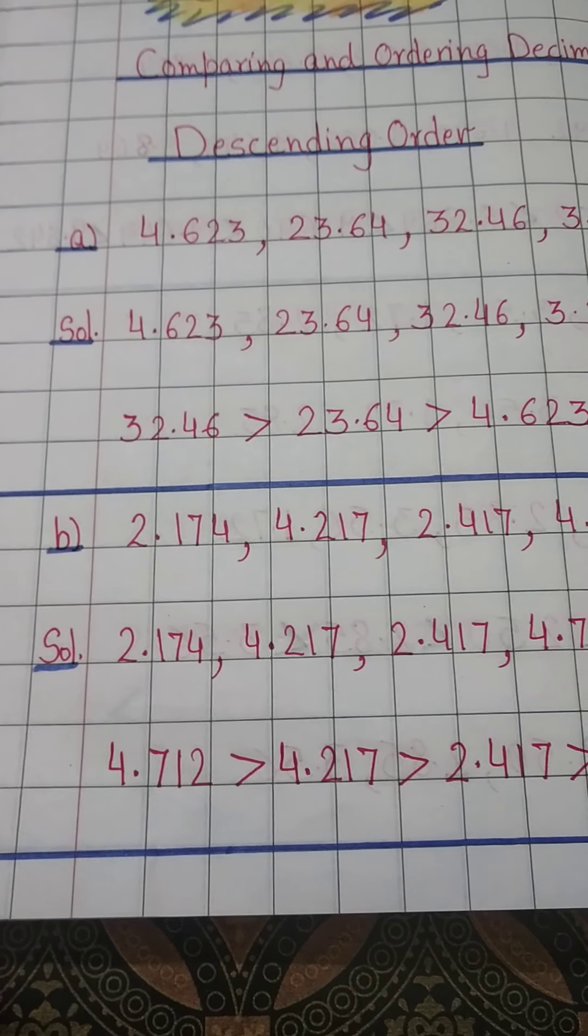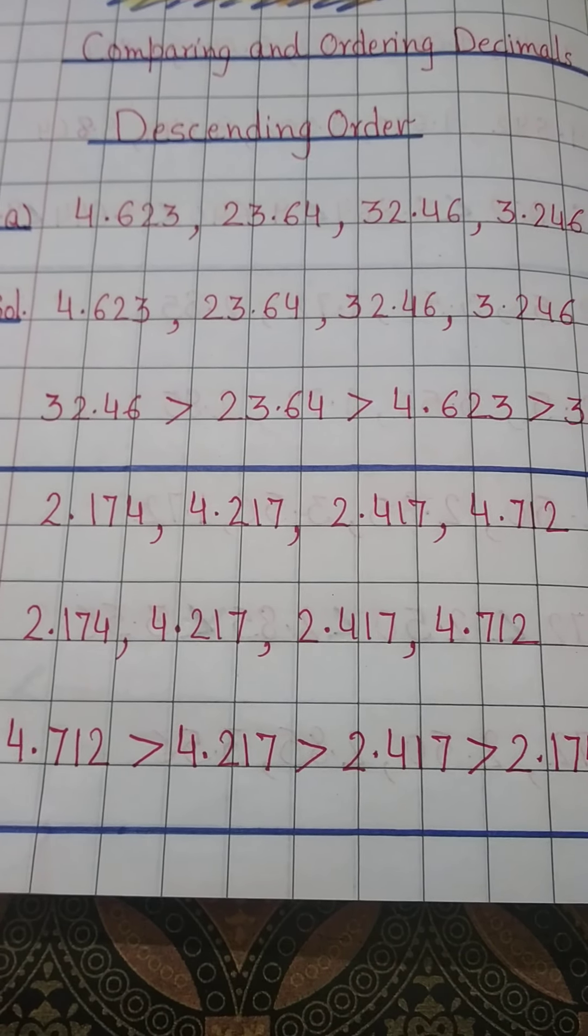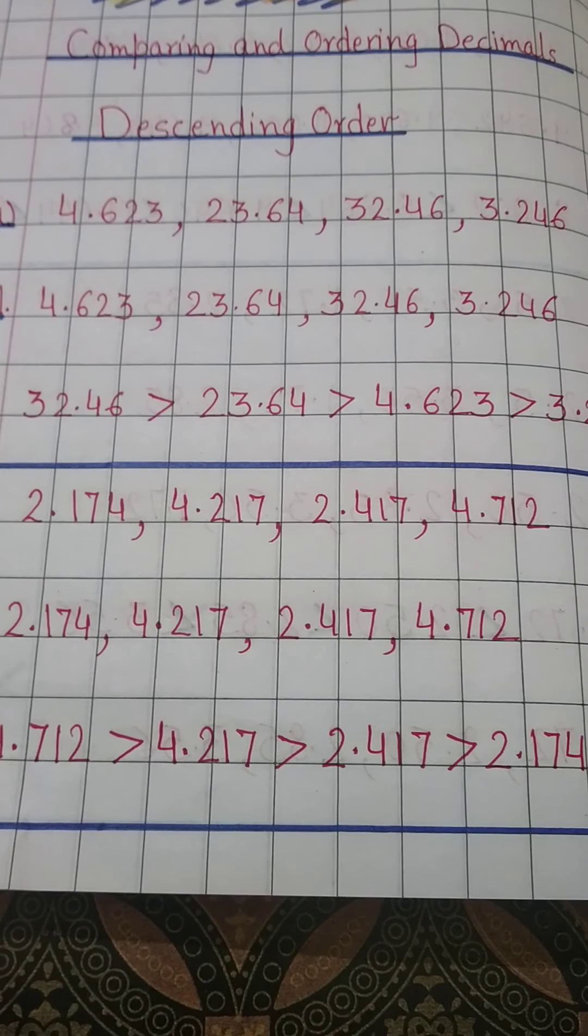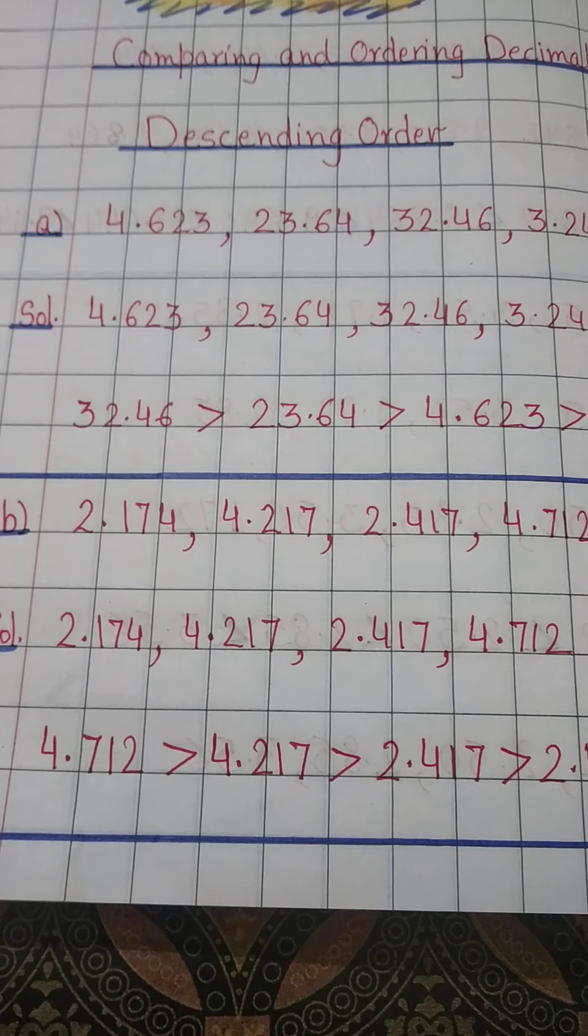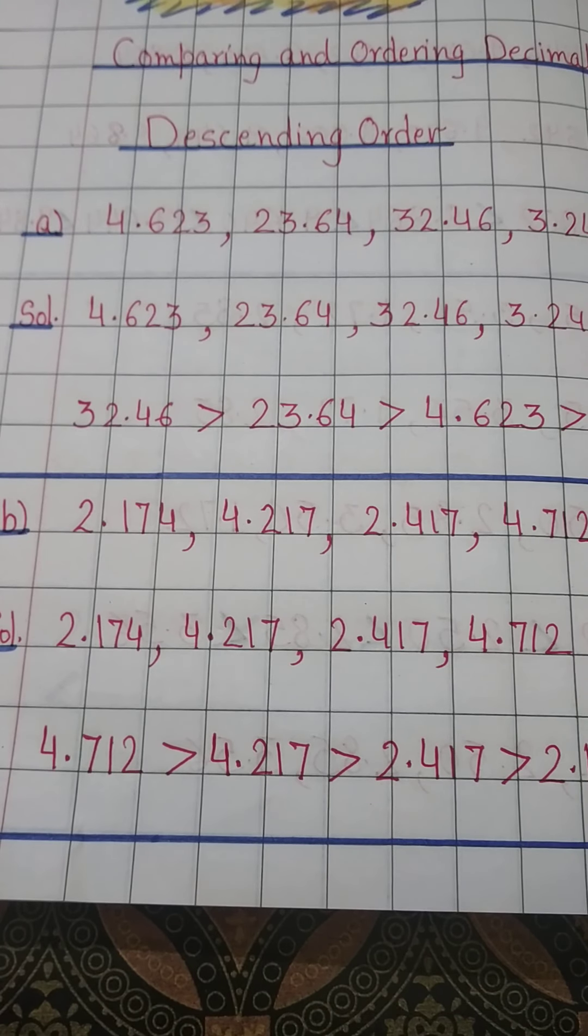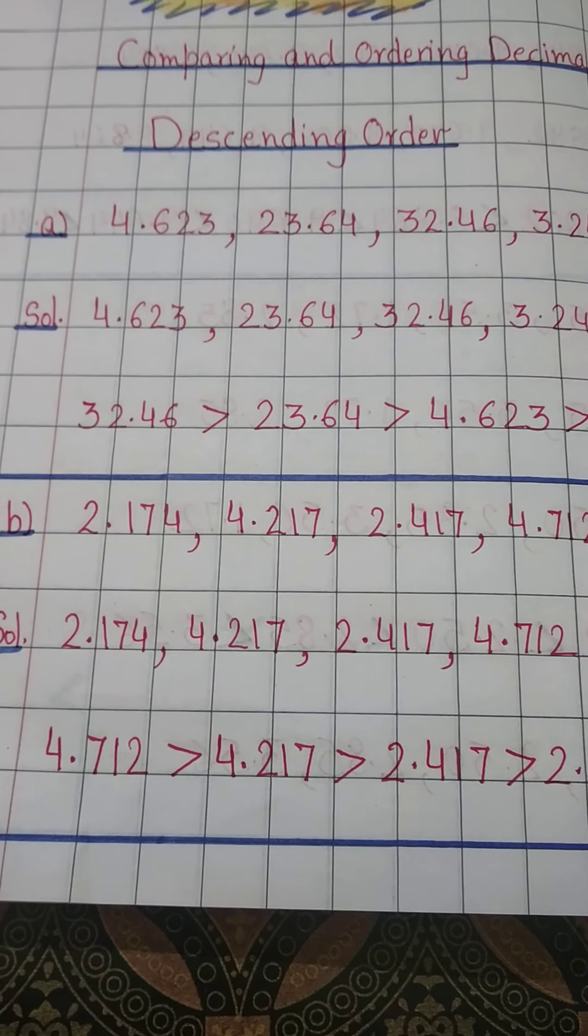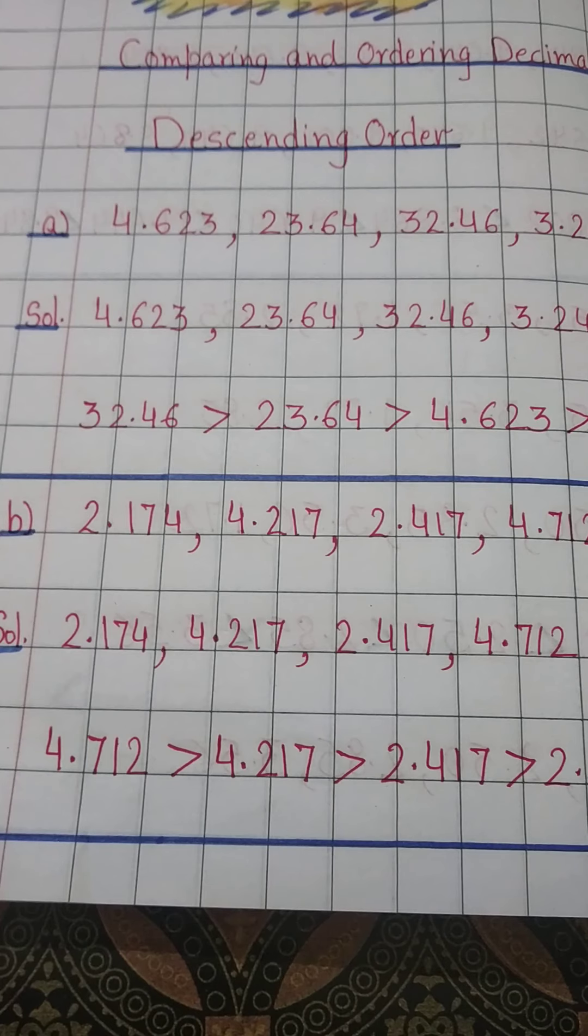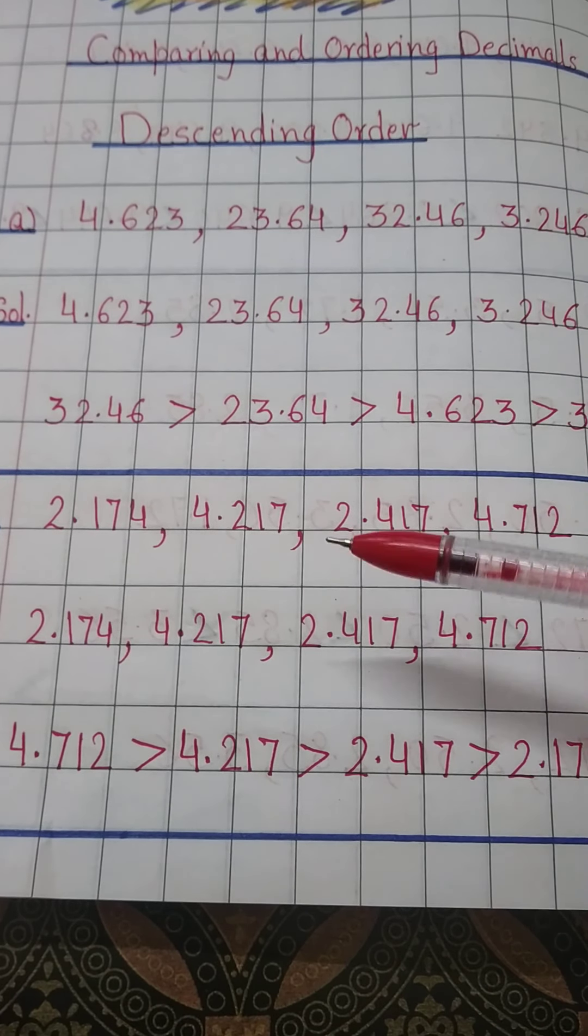Next number is 2.174, 4.217, 2.417, and 4.712. Here before decimal we will compare 2, 4, 2, 4. That means 2 numbers are of 2 point and 2 numbers are of 4 point. We have to write the greatest first. Then we will compare 4 point and 4 point. First is 4.217 and second is 4.712. So 4.712 is greater.